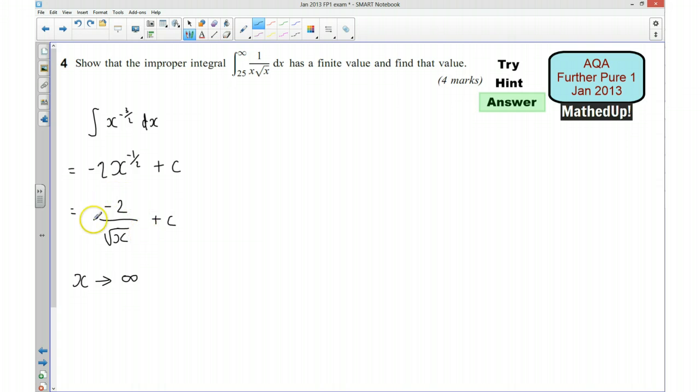So the value of this expression, minus 2 over the square root of x, will get closer and closer to zero. If the denominator becomes really big, the fraction approaches 0.